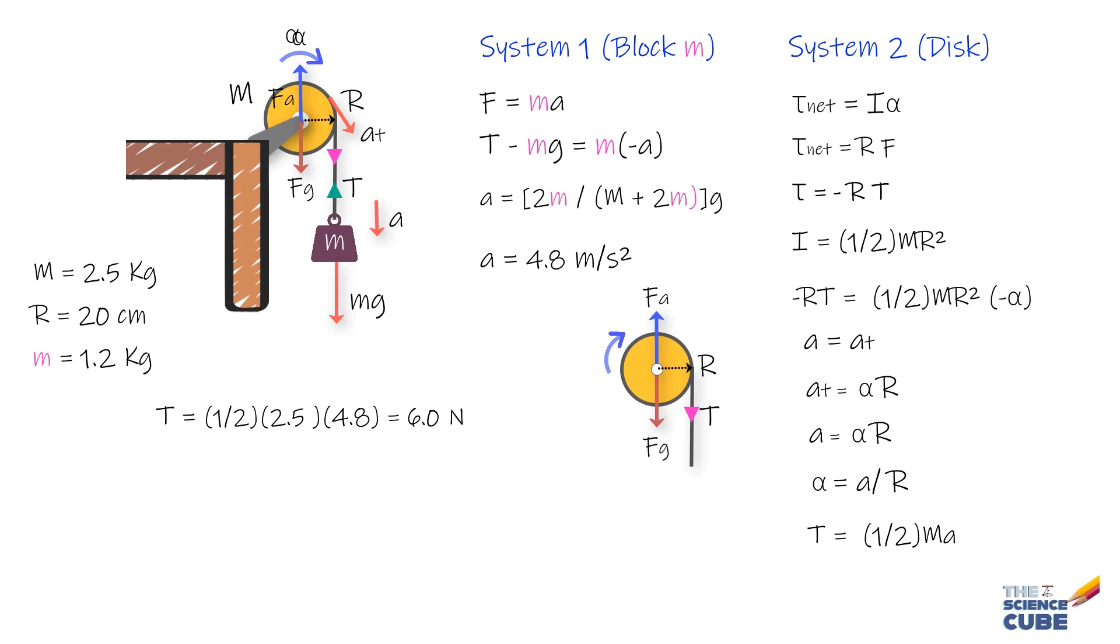the angular acceleration of the disc is alpha equals A upon r, that equals 4.8 meters per second squared divided by 0.2 meters, that equals 24 radians per second squared.